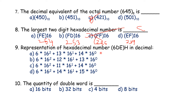The representation of hexadecimal number 6DE: to convert to decimal we use the power of the base at each index position with base 16. Computing the decimal conversion gives the result, and option A is the correct answer.